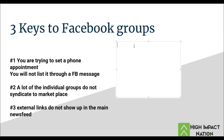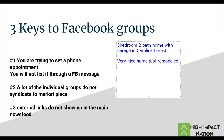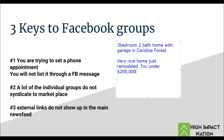So let's use this as an example. Let's say we put the picture of the house. We put: three-bedroom, two-bath home with garage in Carolina Forest. Carolina Forest is a popular area of my market. Very nice home, just remodeled, for under $200,000. When we write that, we want to have a specific listing in mind, but we want to make the ad a little bit more general.